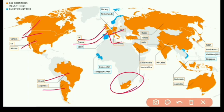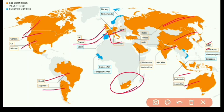In Asia we have China, Russia, India, Japan, South Korea, and Indonesia. Australia represents the Oceania region. Turkey is also a member — Africa and Australia each have only one country as a member of G20.